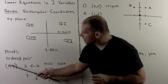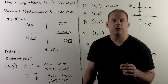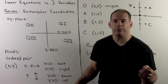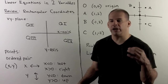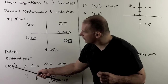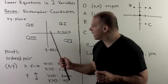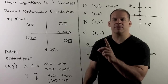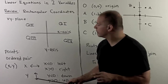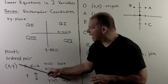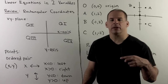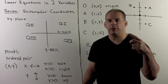These numbers are real numbers, so they can be positive, negative, or zero. If the x value is negative, we move to the left; if positive, we move to the right. For the y value, if it's negative we move down; if positive, we move up.